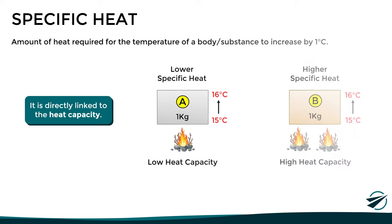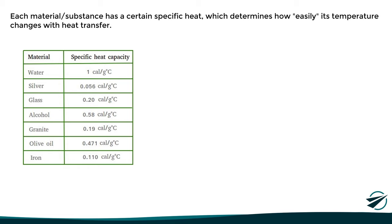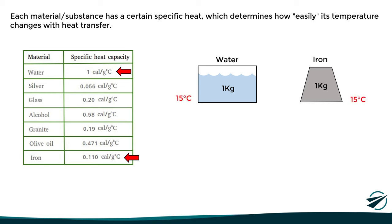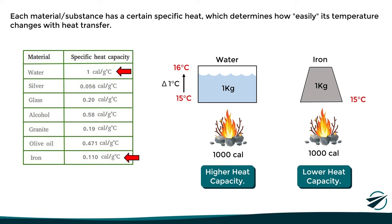Each material or substance has a certain specific heat, which determines how easily its temperature changes with heat transfer. Here we can see a table with the specific heat of different substances and materials. Water has a specific heat of 1 calorie per gram per degree Celsius, while iron has a specific heat of 0.11, which is almost 10 times lower than water. So, if we had the same amount of water and iron at the same temperature and exposed them to a heat source of 1,000 calories, their temperature would change differently. Water, having a high heat capacity, increases in temperature by only 1 degree, while iron, having a lower heat capacity, increases almost 10 times more — in this case, 9 degrees.